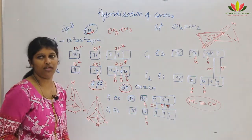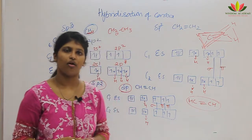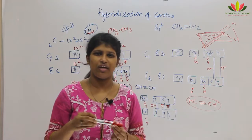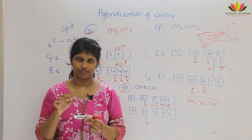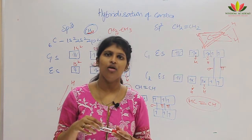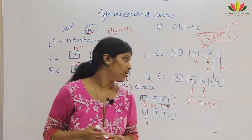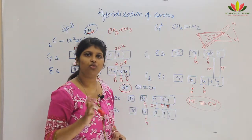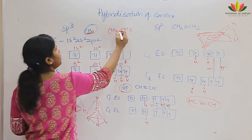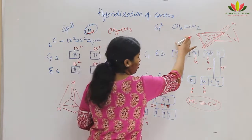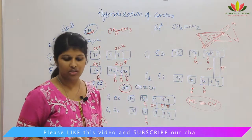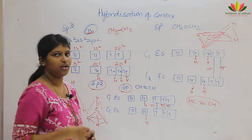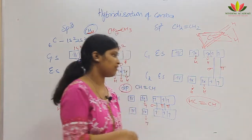Now for bond strength: a single bond can easily rotate because there is only one connection between two carbons, and it is relatively weak. A double bond is much stronger than a single bond and is quite difficult to twist. A triple bond is the strongest — you cannot rotate it because there are three bonds and the force of attraction between the atoms is very high. So bond strength increases: single bond is weakest, then double bond, then triple bond, with triple bond compounds being very strong in nature. These are the bond characteristics of hybridized carbon. We have seen hybridization, the hybridization states, shapes, and bond strength.